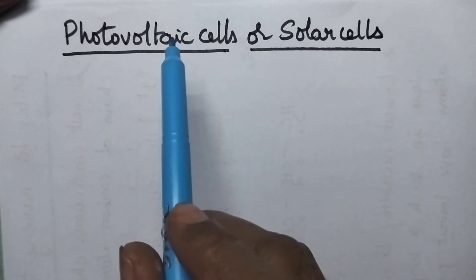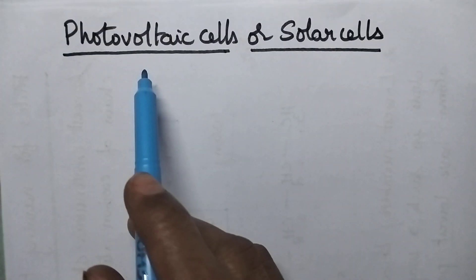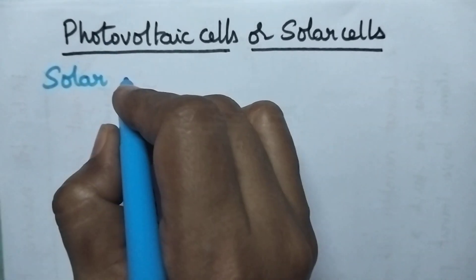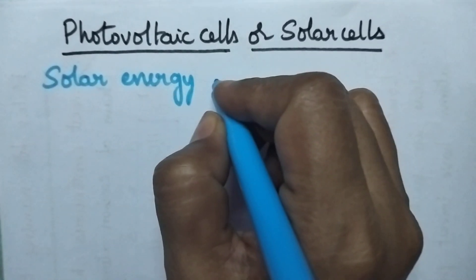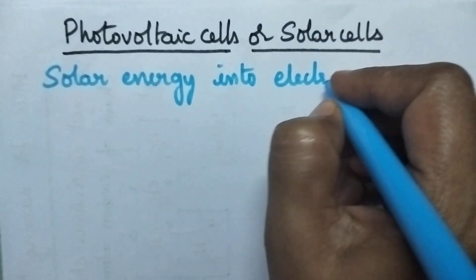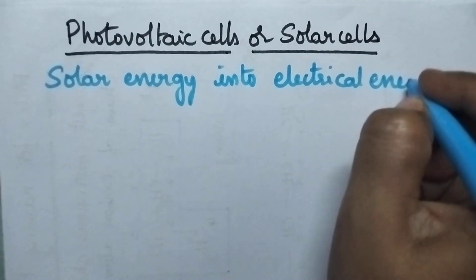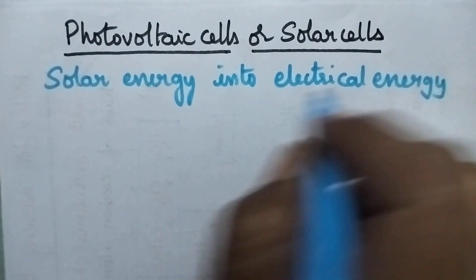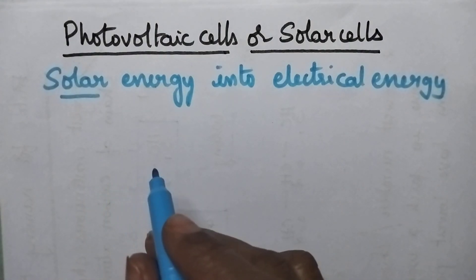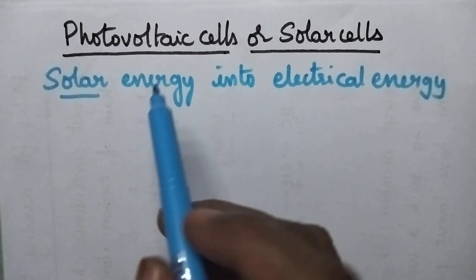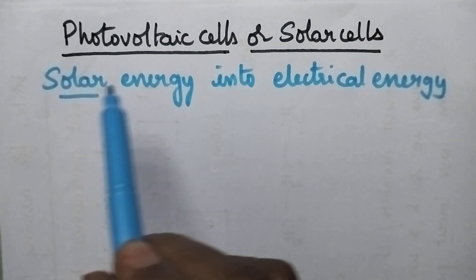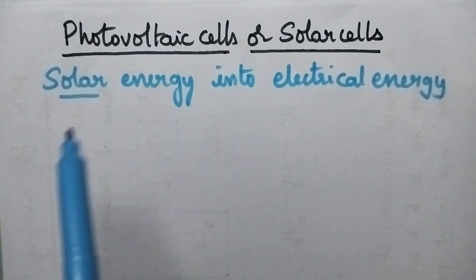Photovoltaic cells are the devices which are used for the conversion of solar energy into electrical energy. Solar energy means the solar radiations which can reach the earth. By using photovoltaic cells, it is possible to convert solar energy directly into electrical energy.